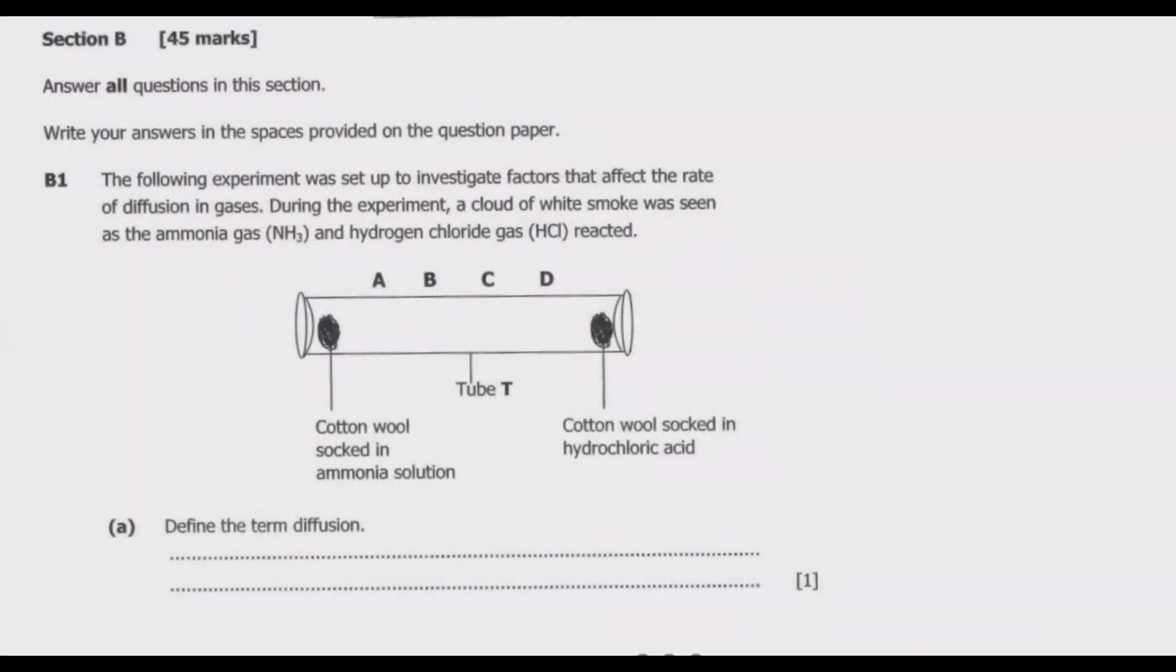Welcome viewers to another episode on ASUG 12 exams. In this episode we are now looking at section B of the August 2022 science paper 2, which is basically the standard O level chemistry. In the first four episodes we covered questions 1 through 20.